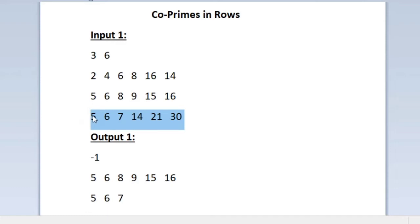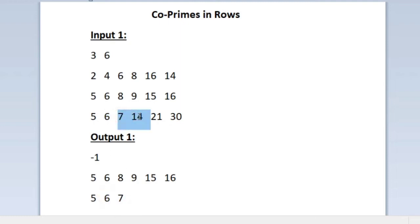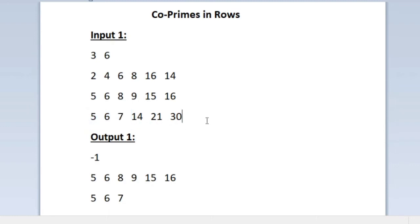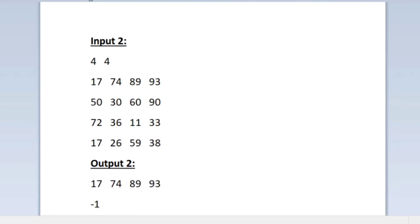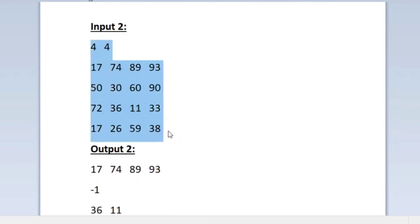Similarly we check the third row. The pair 5 and 6 is co-prime since HCF equals 1, so we print 5 and 6. The pair 6 and 7 is also co-prime, so we print 7 (6 already printed). For 7 and 14 the HCF is not 1, and 14 and 21 can be divided by 7, and 21 and 30 by 3. So we print only 5, 6, and 7. We will also use sample input 2 for testing our program.